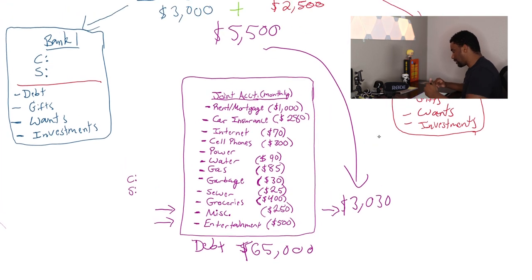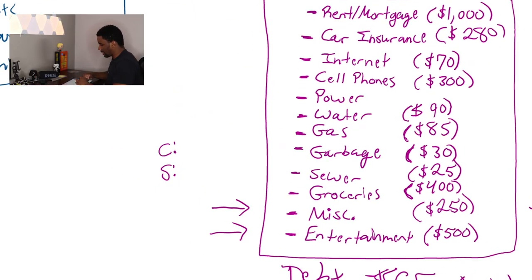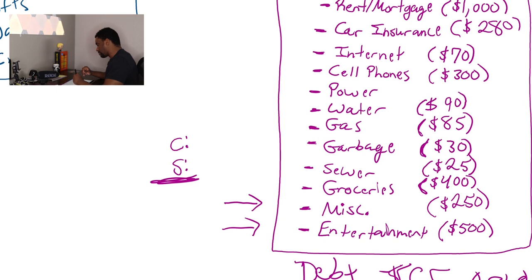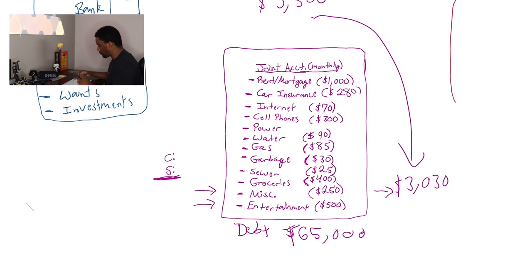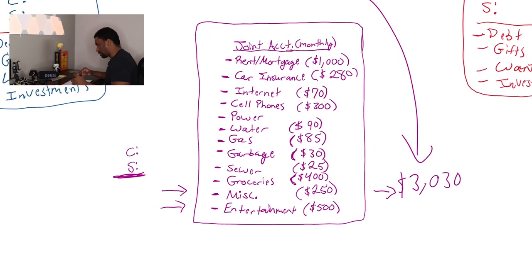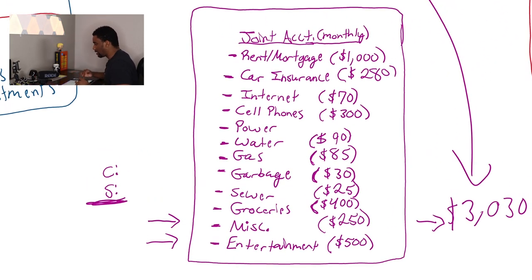And this is also a money management technique, because again, this also, this joint account, this purple here, it has, this purple here, it has its own checking and savings account. So that's the basic portion of this. And that's just really the ideology and money mindset behind it.